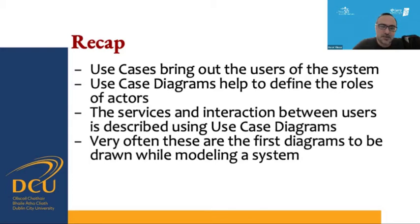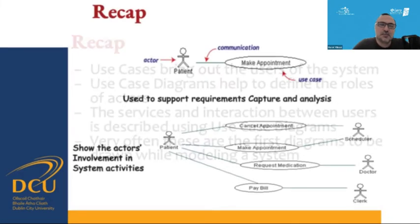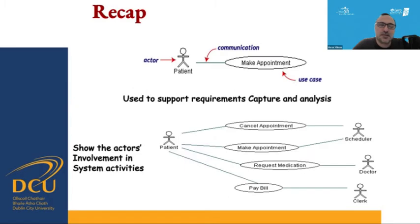Very often these are the first diagrams initially drawn when you start to initiate the system and begin working on requirements analysis. As an example, we can see an actor here as a patient. There is an oval which contains the functional requirement inside — we can see 'make an appointment' — and there is a communication line between the oval and the patient.